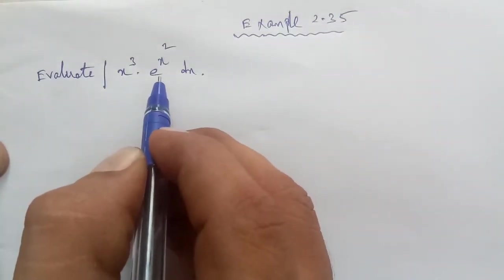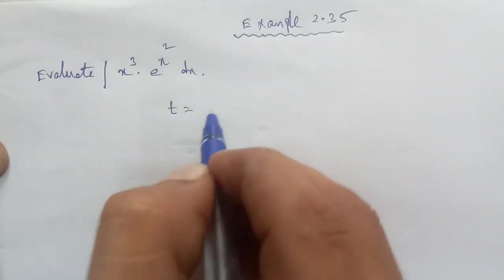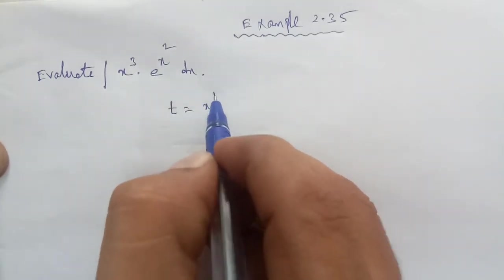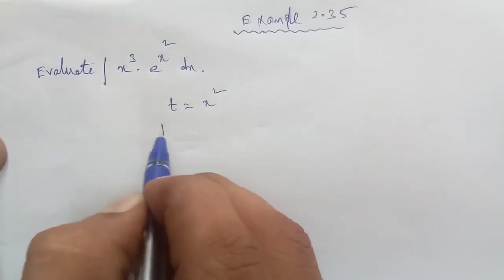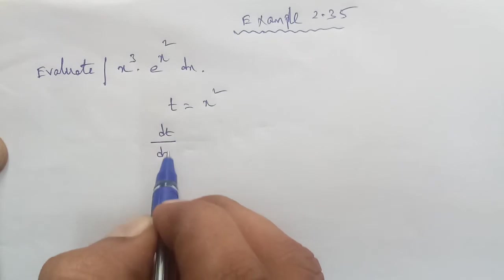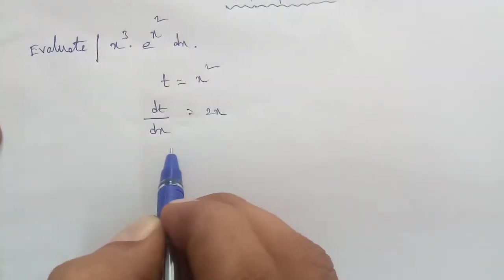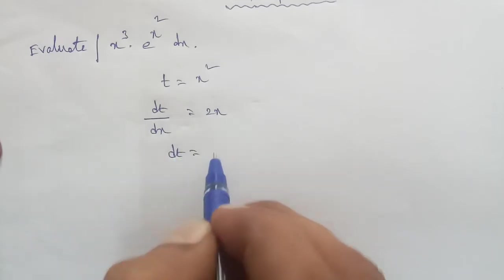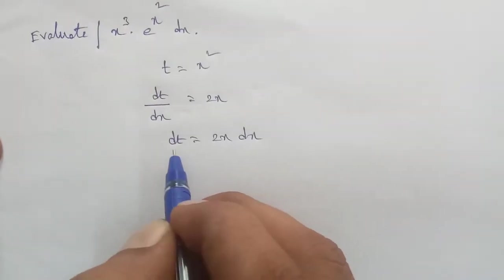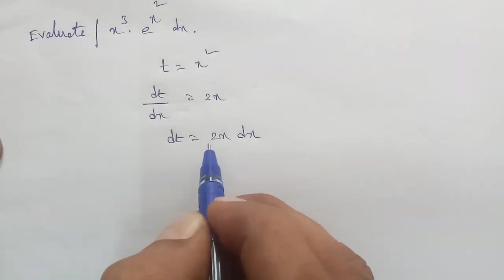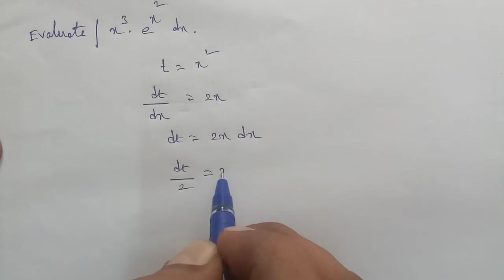We will apply substitution. Let t equal to x squared. Differentiating with respect to x, dt by dx is equal to 2x. Cross multiplying, dt is equal to 2x dx. Therefore dt by 2 is equal to x dx.